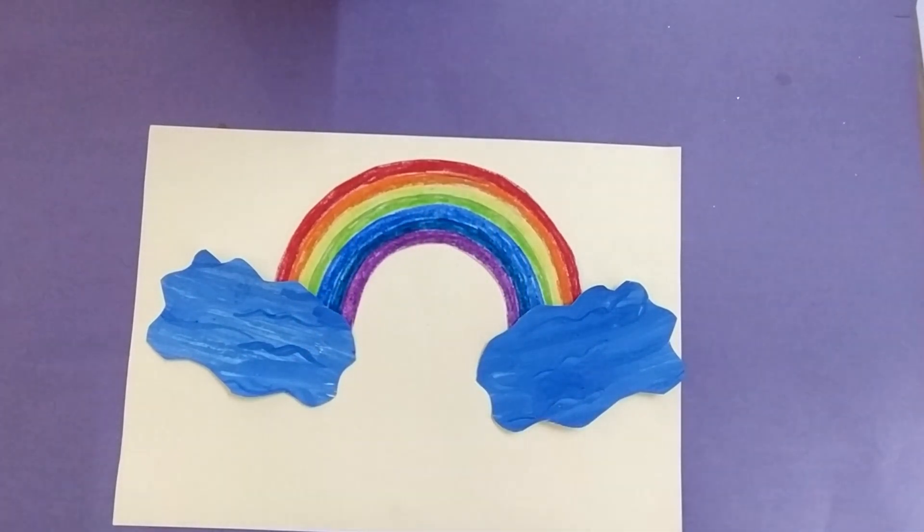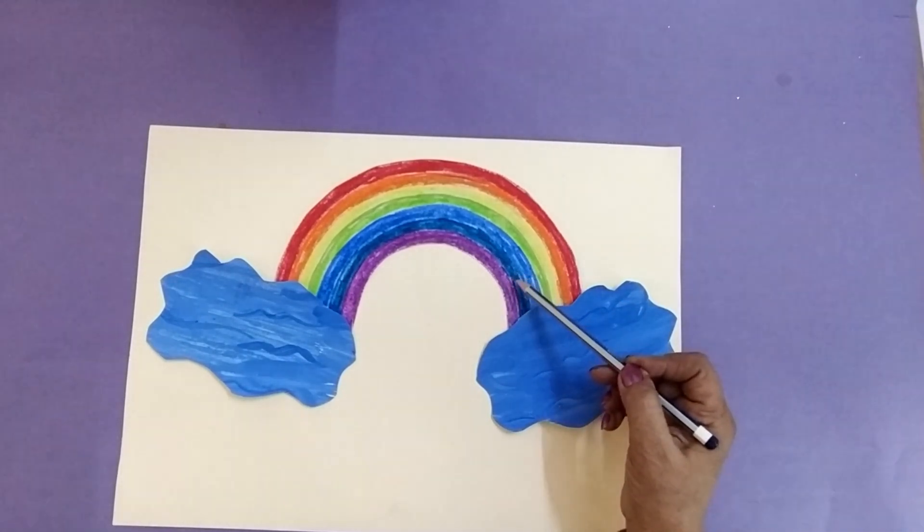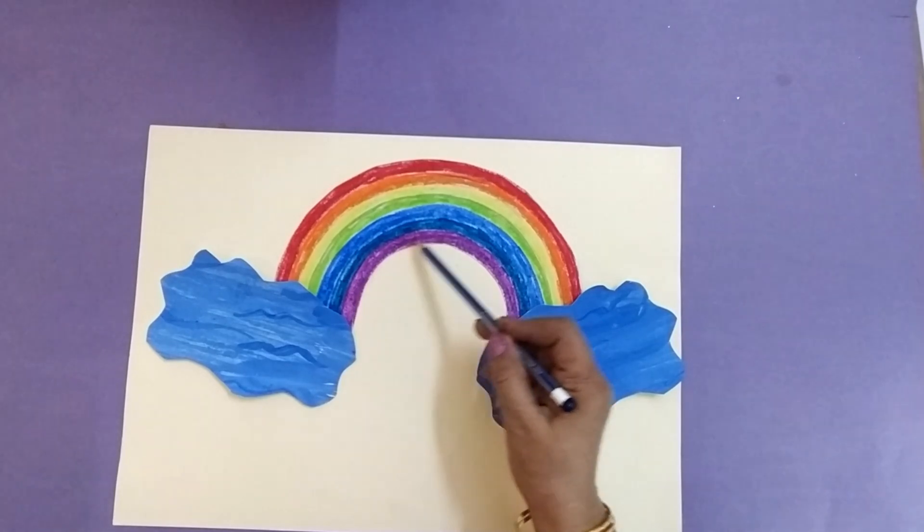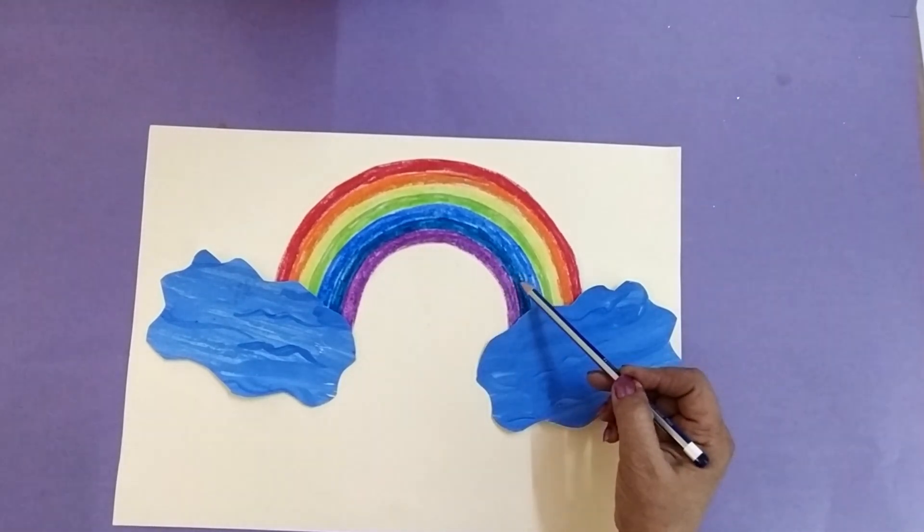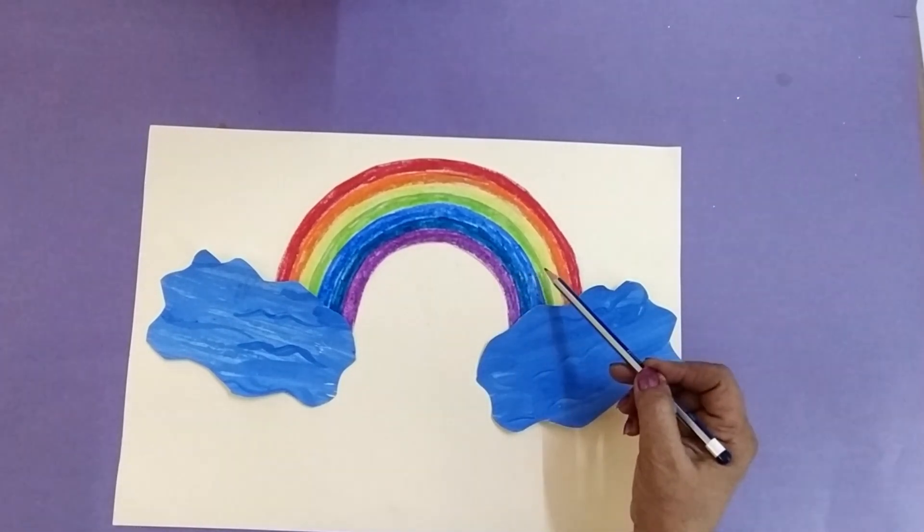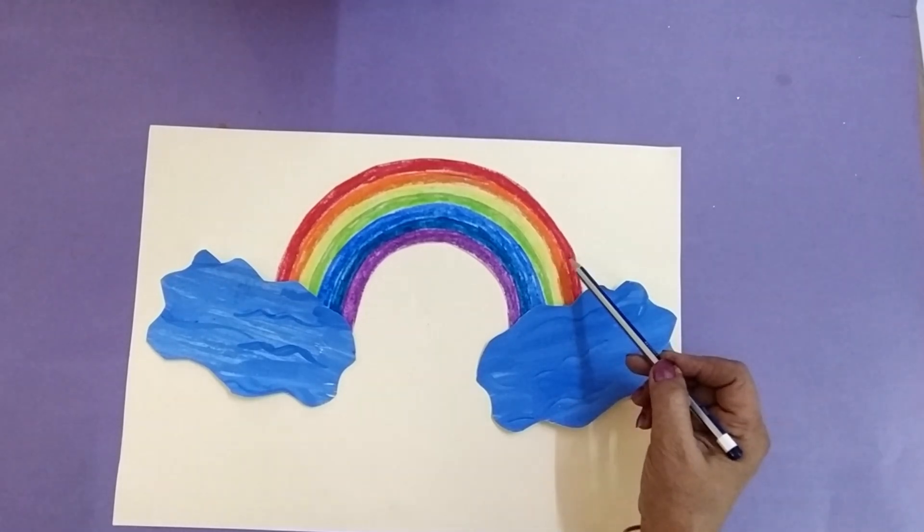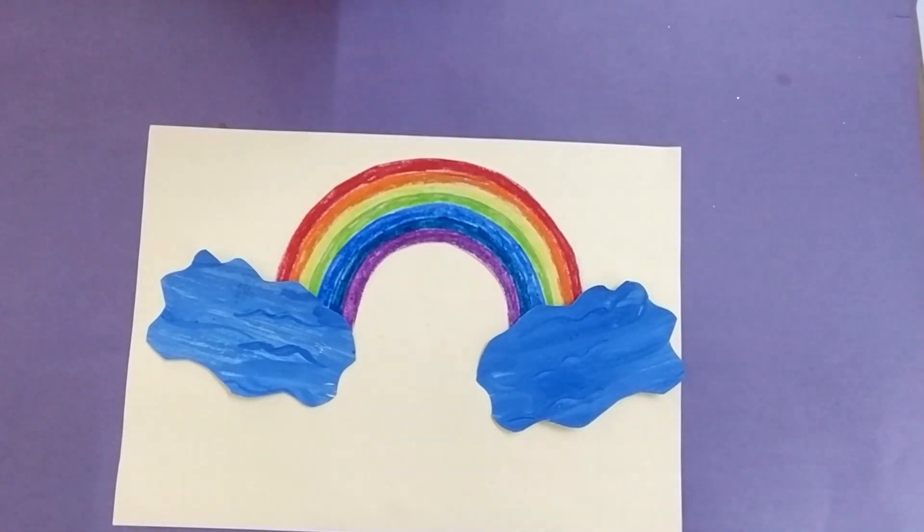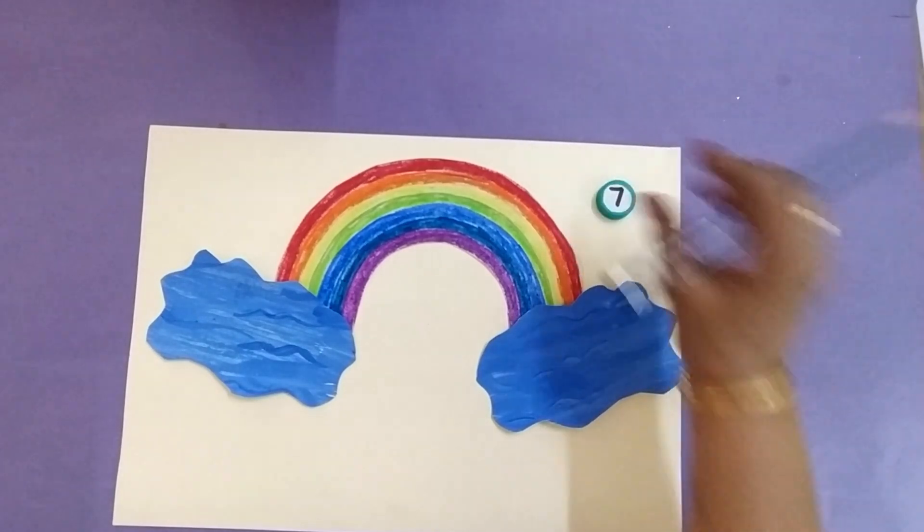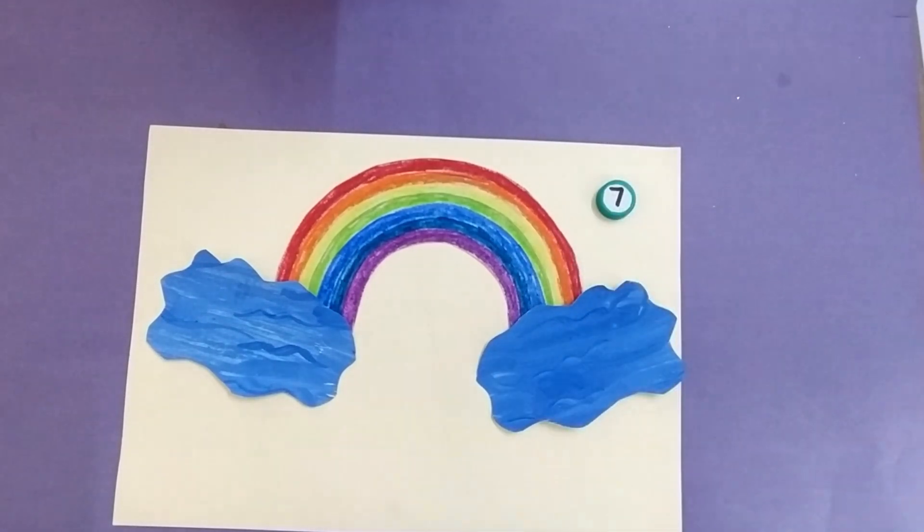Do you know how many colors are in rainbow? Let's count. One, two, three, four, five, six, seven. Seven colors. Rainbow में कितने colors होते हैं? Seven colors.